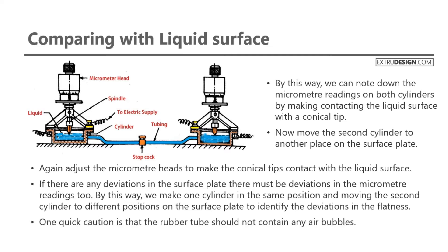One quick caution: the rubber tube should not contain any air bubbles. The electric supply is used to make sure the conical tip is contacting the liquid surface. This is all about flatness testing of surface plate with the comparing with liquid surface method.